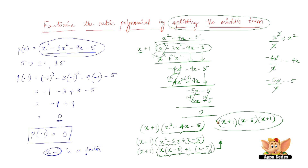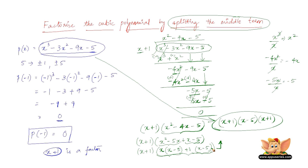That gives us (x + 1)(x - 5)(x + 1), which is the fully factorized form of the expression. To summarize: we first find a factor of x³ - 3x² - 9x - 5, then divide the expression by that factor to find the quotient — a quadratic — and finally factorize the quadratic by splitting the middle term to get all three factors.